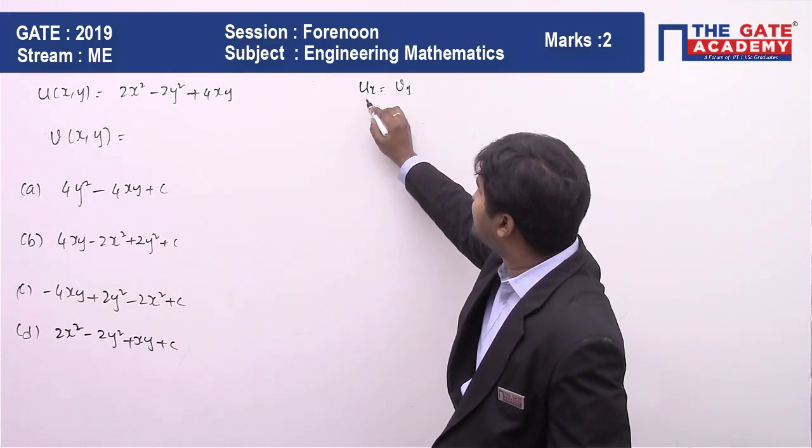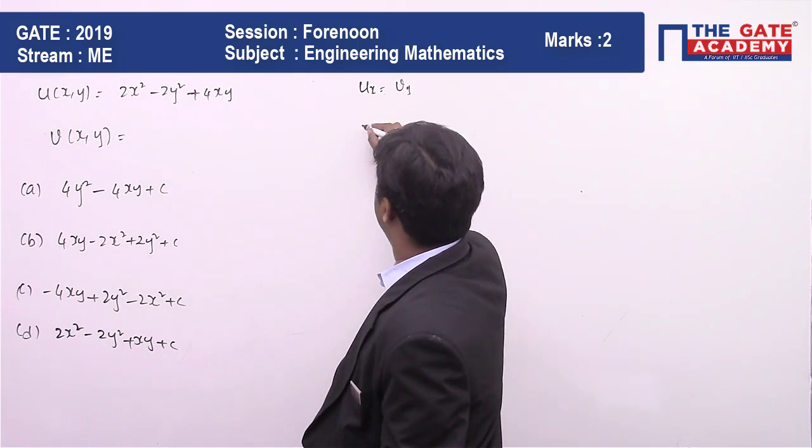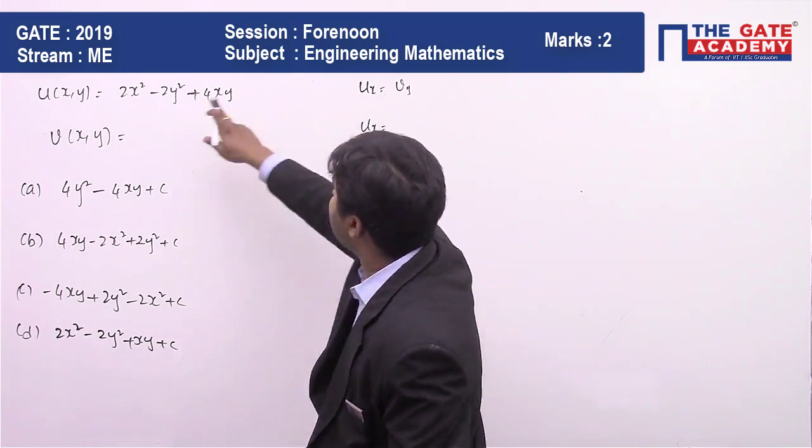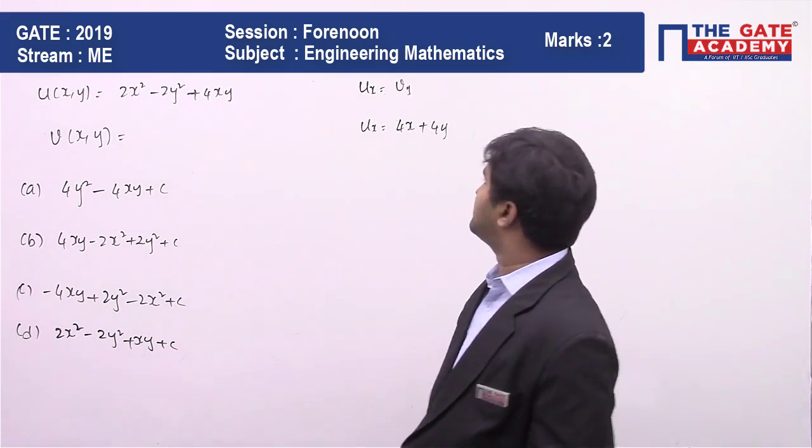For that, I'm going to derive my function u with respect to x. So u_x is going to be 4x + 4y.